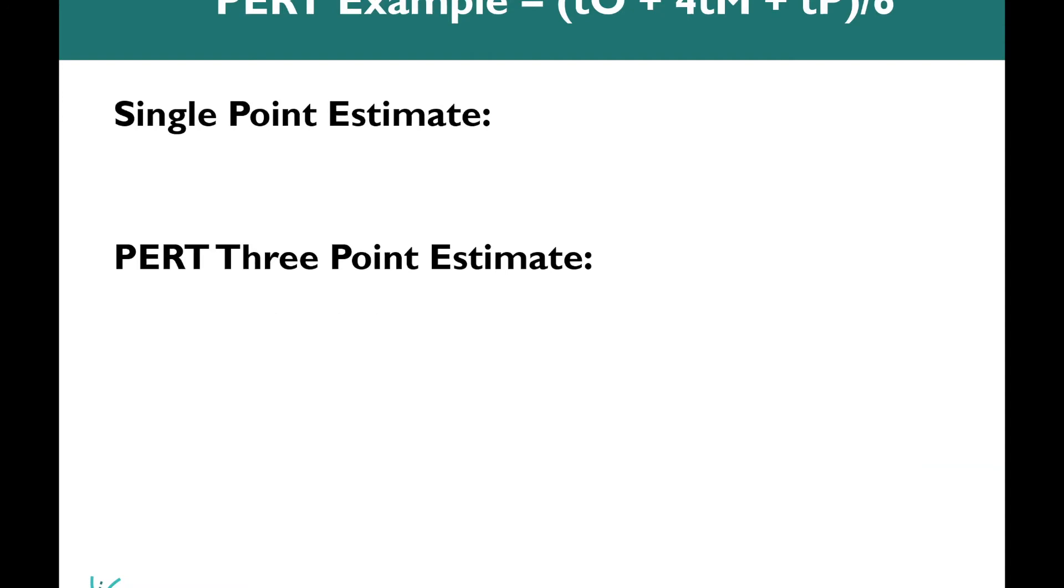Let's look at an example here at how we can calculate PERT. You'll start to see that it can be more accurate than using a single point estimate. If we were using a single point estimate, we might say, okay, we need to create the designs. We think it's going to take somewhere around 80 hours. That's a single point estimate for time.